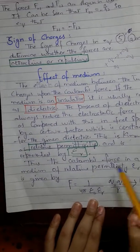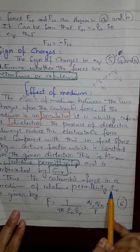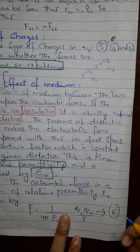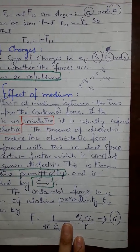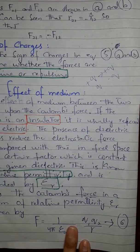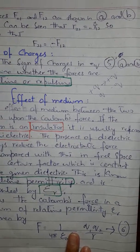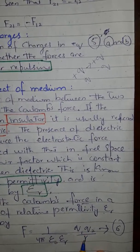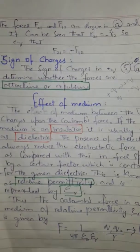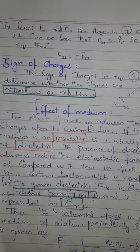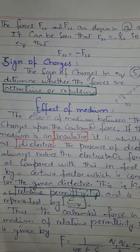The presence of a dielectric always reduces the electrostatic force compared with that in free space by a constant factor for the given dielectric. This is known as the relative permittivity. When an insulator is used as the medium, whether the charges attract or repel, the electrostatic force is less due to the dielectric. This relative permittivity is represented by εᵣ.